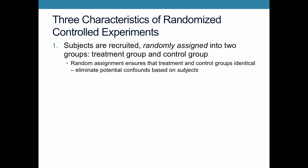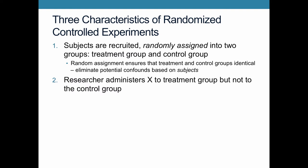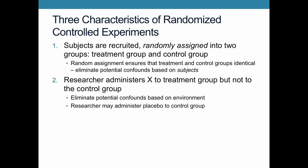The second characteristic is that the researcher is administering X, or the treatment — X is our independent variable. You're administering this treatment to the treatment group, but not to the control group. By having the researcher administer this, you're eliminating potential confounds that may emerge based on the environment, so the only difference between the experience of the subjects is whether they receive the treatment or not. The researcher may also administer a placebo to the control group to ensure they have an equivalent experience without actually getting the treatment.